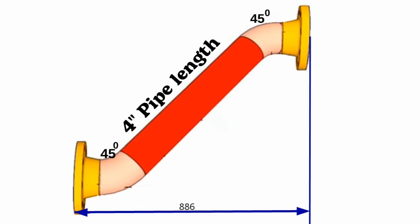As you see, this is a 4-inch pipe spool. This pipe spool consists of 2 off 4-inch weld neck flanges, 2 off 4-inch 45-degree butt weld elbows, and 4-inch pipe piece. The total length of this pipe spool is 886 millimeters. We will calculate the length of the 4-inch pipe used in the fabrication of this pipeline.